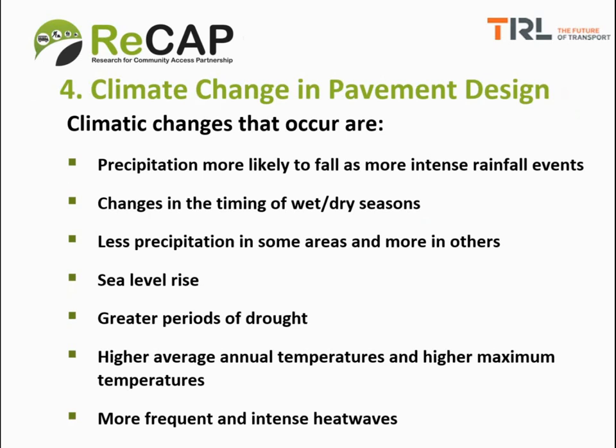We shall now look at climate change in pavement design. Road engineers are accustomed to designing infrastructure for a specific type of climate, but the climate they are designing for is no longer fixed. Basing designs on historic patterns and averages is no longer sufficient — information on future climate needs to be taken into account. The exact type and magnitude of future changes will vary by geographic region and with the amount of global greenhouse gas emissions.